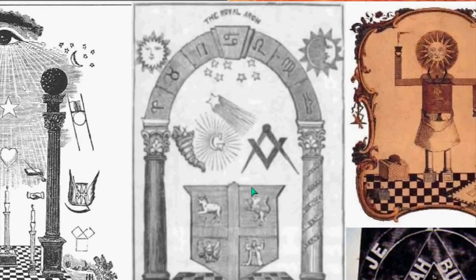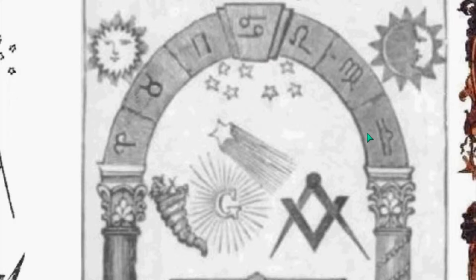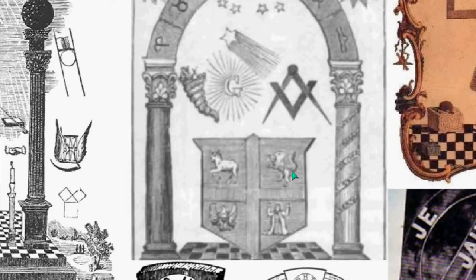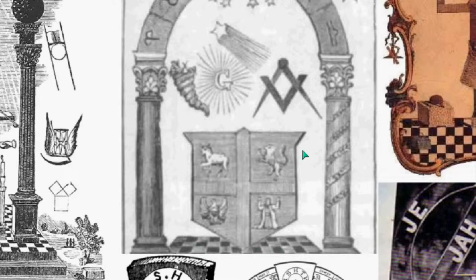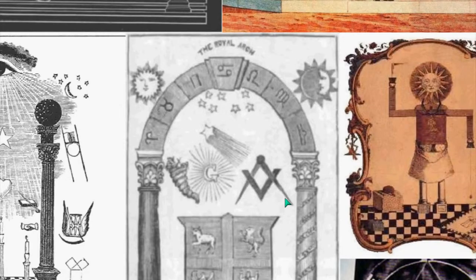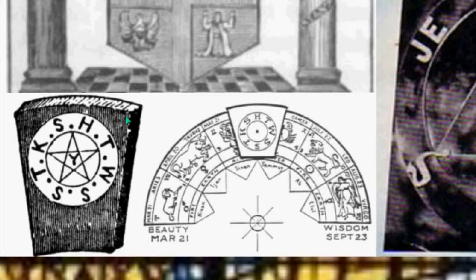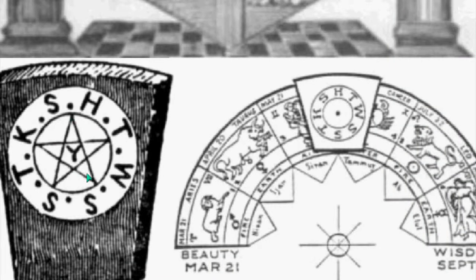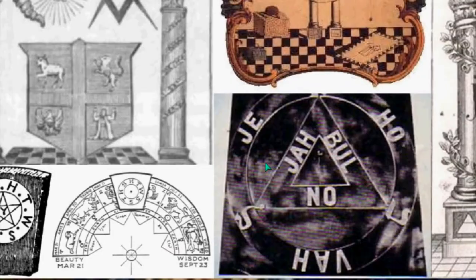Here is the Royal Arch of Freemasonry — this is York Rite. You can see astrological signs around this, and the beast that you saw in Aleister Crowley's tarot card, which also references the Bible. They like to reference the Bible and make you believe this is all biblical. Here are similar depictions of that Royal Arch, and here's the keystone in Freemasonry with a pentacle in it. I forget what the acronym is, but it has to do with the initiate.